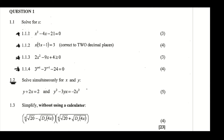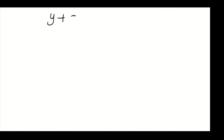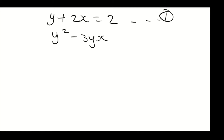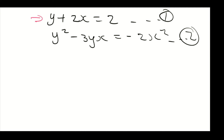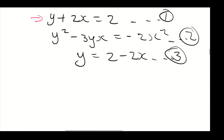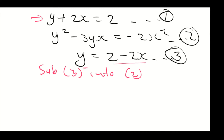For 1.2, we need to solve for x and y using two equations: y plus 2x equals 2 as equation 1, and y squared minus 3yx equals minus 2x squared as equation 2. To solve, we rearrange equation 1 to get y equals 2 minus 2x as equation 3.